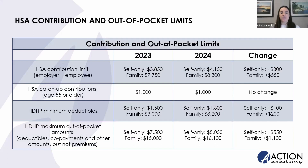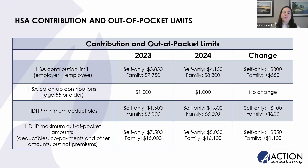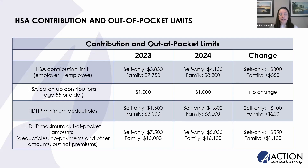The IRS publishes yearly guidelines governing contribution and out-of-pocket limits that HSAs and health plans are subject to. Specifically, these guidelines speak to the yearly contribution limits consumers might make, catch-up contributions for consumers who are 55 or older, the threshold for what is considered a high deductible health plan, and the maximum out-of-pocket amounts. The chart shows current year figures, previous year figures, and the change. The catch-up contribution is the only amount that has not changed this year — every other amount has risen, meaning more money your clients could save.